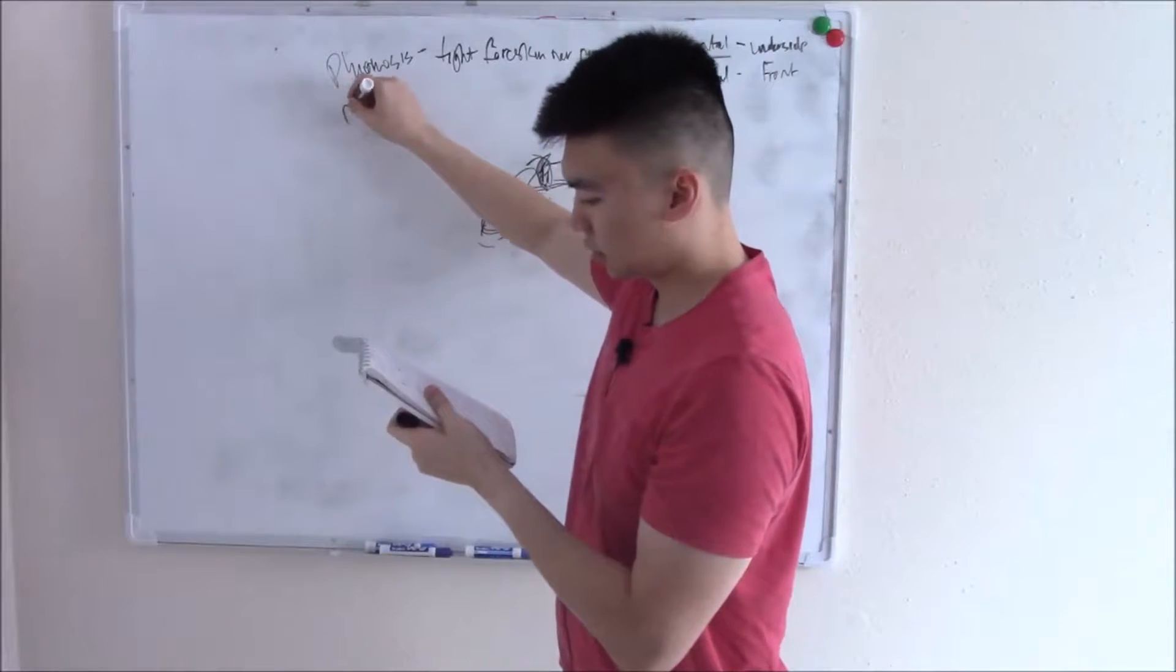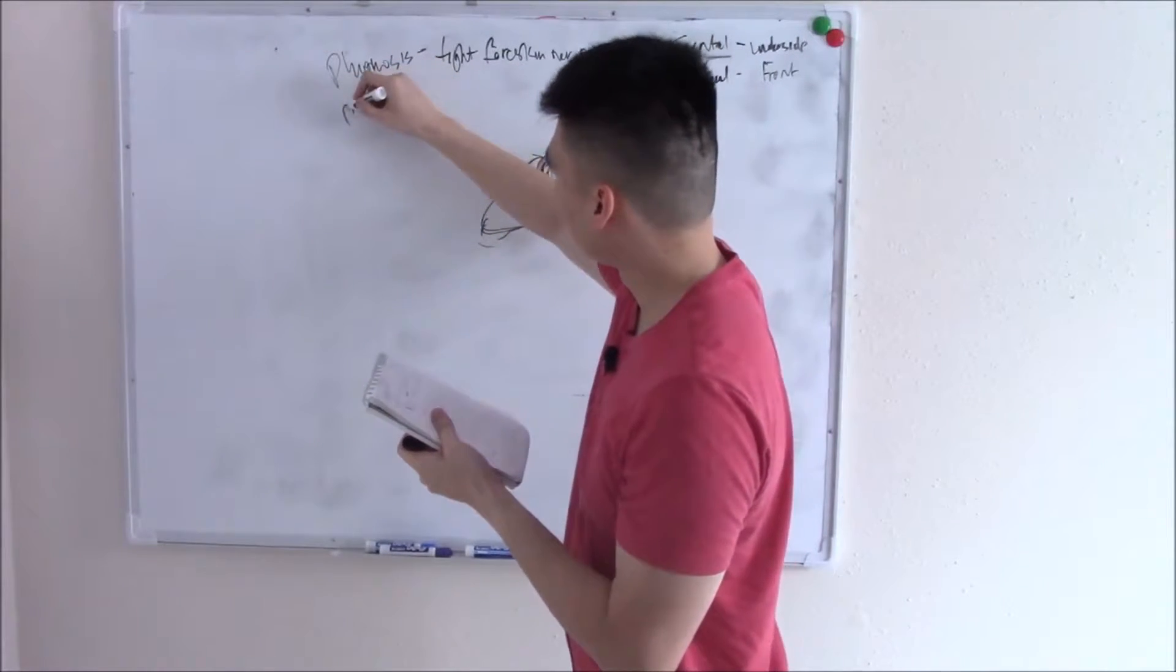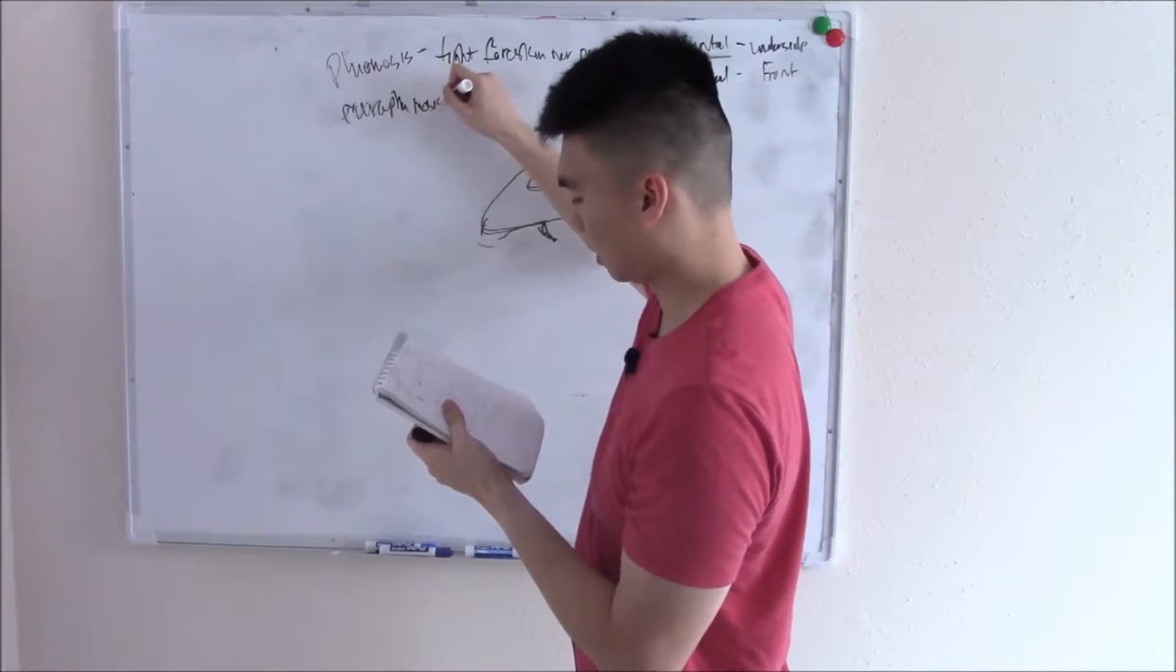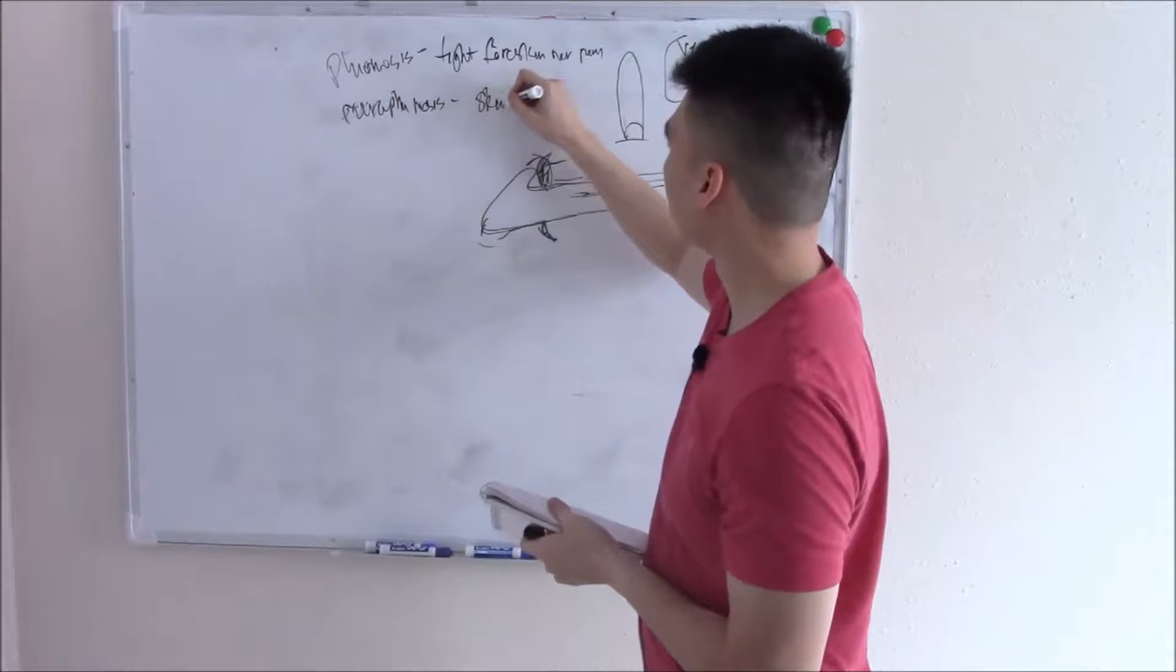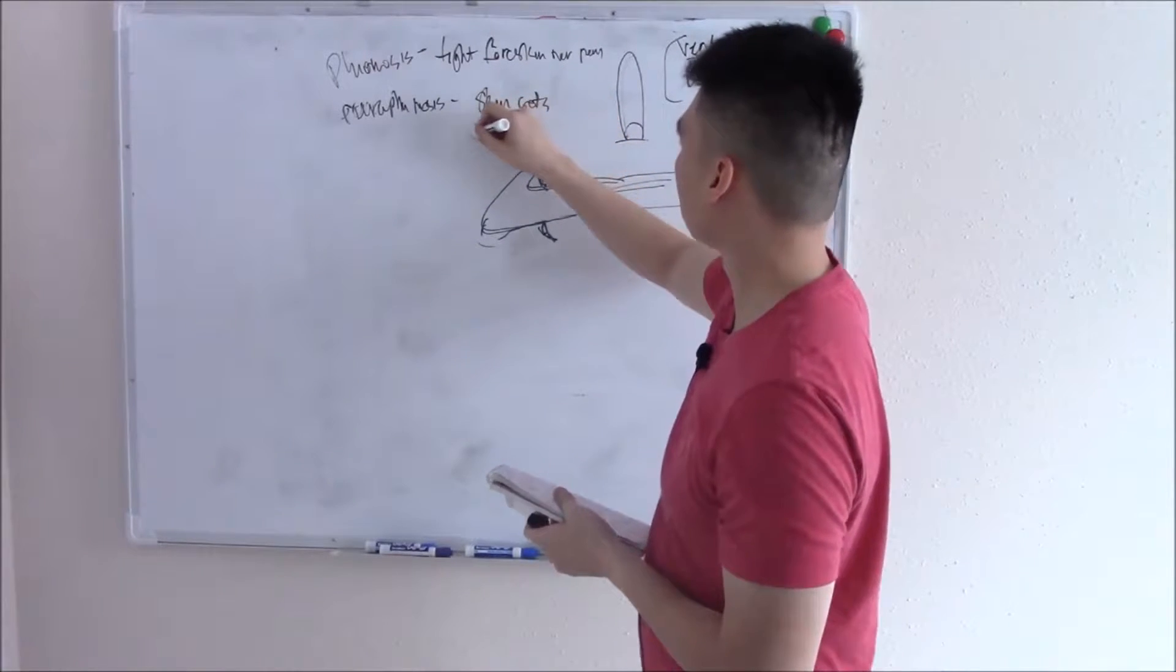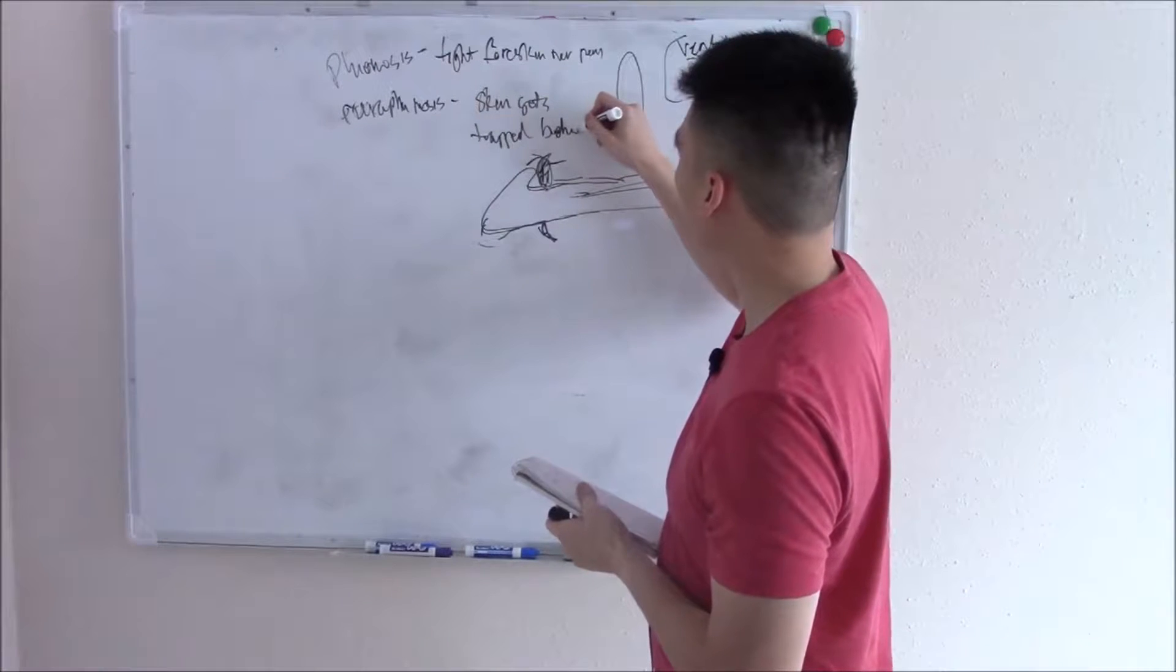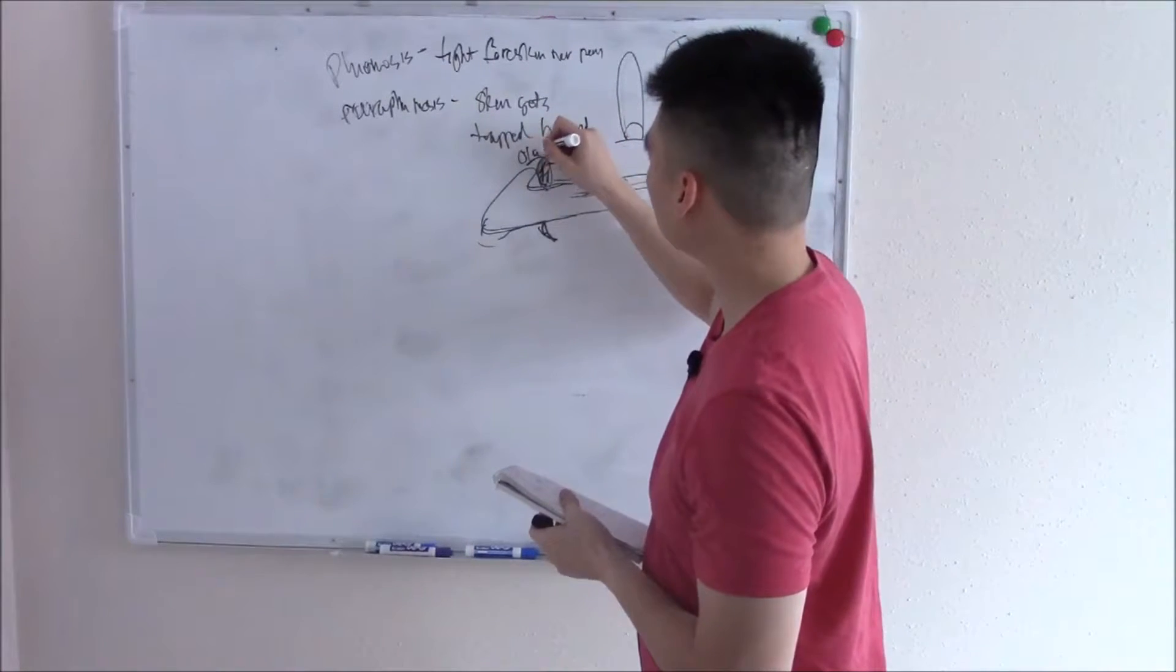And that entrapment can cause ischemia. We call this paraphimosis. This is when skin gets trapped, gets trapped behind glans penis.